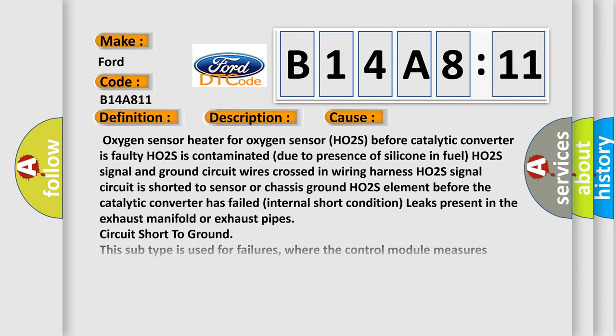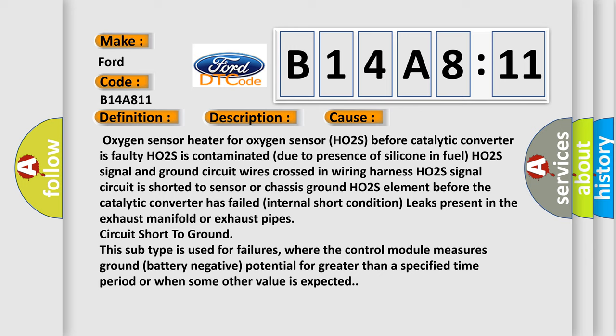This diagnostic error occurs most often in these cases: Oxygen sensor heater for oxygen sensor HO2S before catalytic converter is faulty. HO2S is contaminated due to presence of silicone in fuel. HO2S signal and ground circuit wires crossed in wiring harness. HO2S signal circuit is shorted to sensor or chassis ground. HO2S element before the catalytic converter has failed. Internal short condition. Leaks present in the exhaust manifold or exhaust pipes.